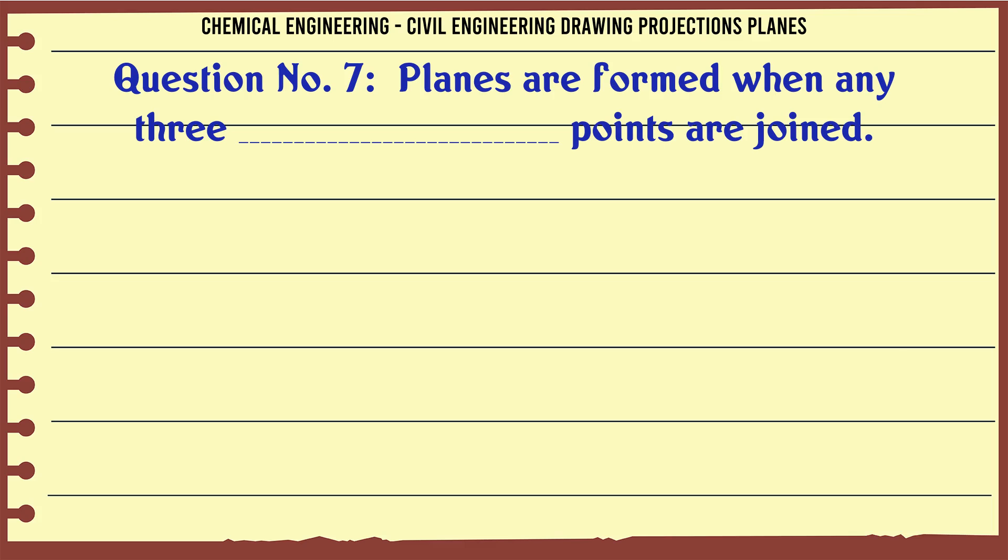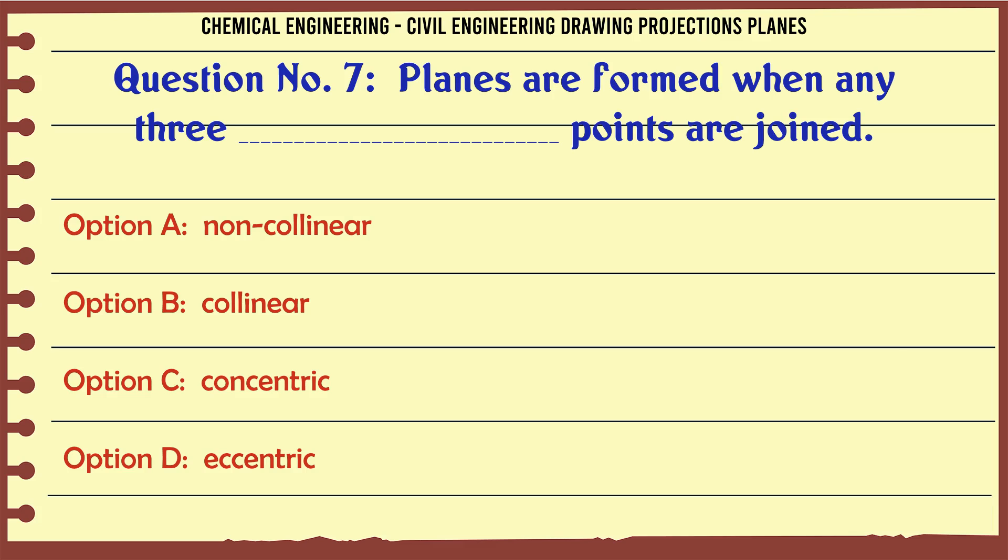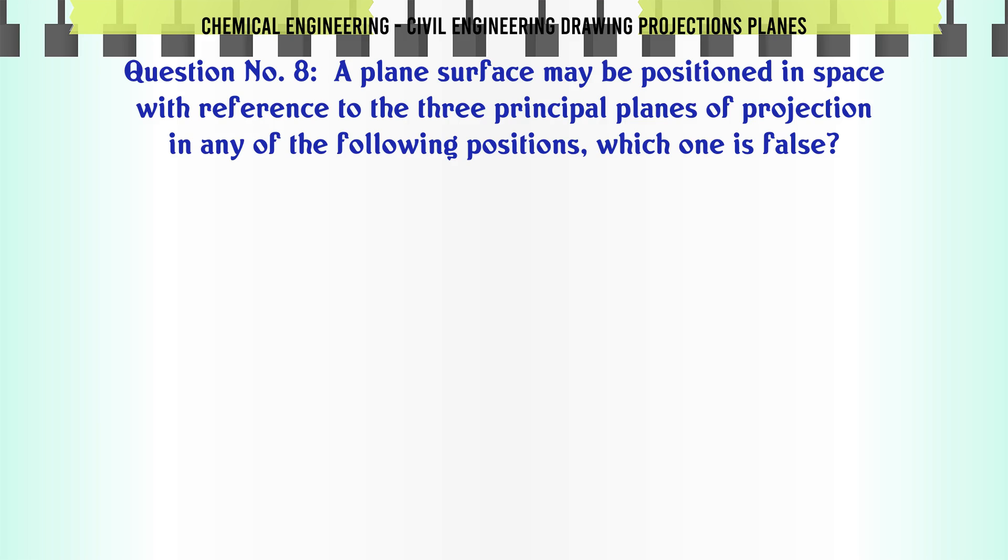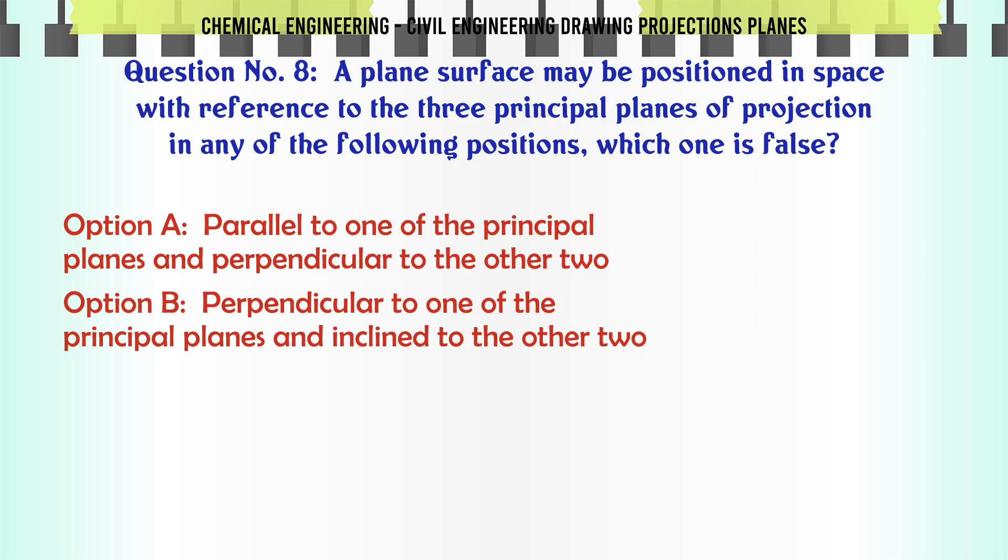Planes are formed when any three points are joined. Options: A. Non-collinear, B. Collinear, C. Concentric, D. Eccentric. The correct answer is Non-collinear.